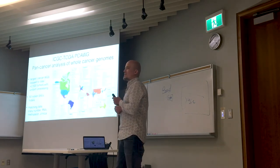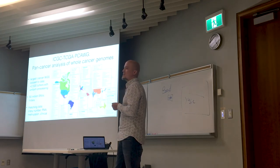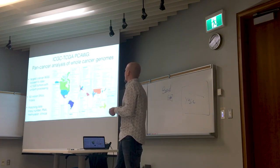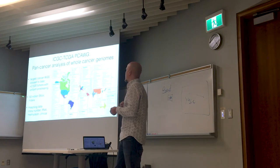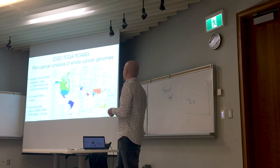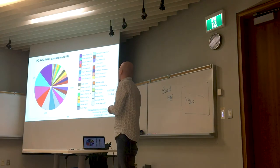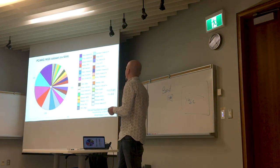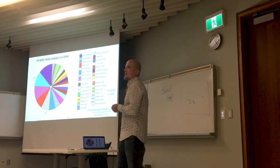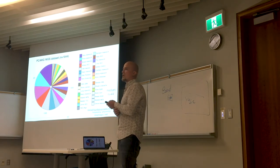Our data comes from the ICGC/PCAWG project — the largest cohort of whole genome sequences, combining about 35 different tumor supertypes, with about 50 million somatic single nucleotide variants and indels. We also have gene copy number data, RNA sequencing data, some methylation data, and clinical data. This consortium data comes from all over the world. There are a few tumor types with more than 100 samples; the median is about 40 samples, but pooled together it becomes an interesting dataset.